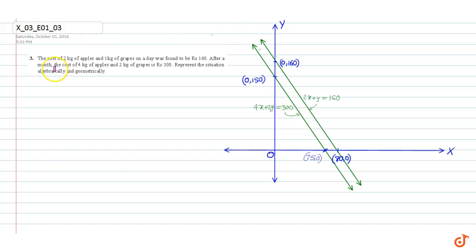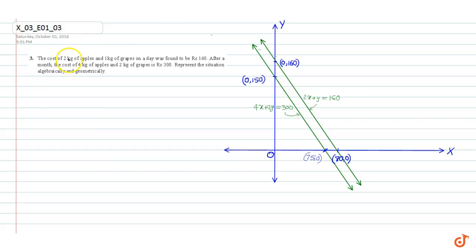For this question, we have to represent the situation algebraically and geometrically. Let x be the cost of 1 kg of apples and y be the cost of 1 kg of oranges.